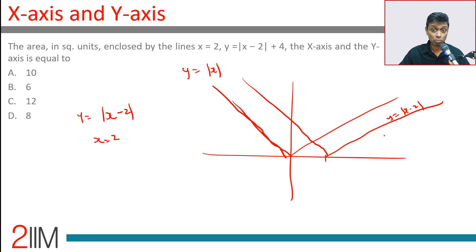How will y=|x-2|+4 be? Add 4: 1, 2, 3, 4. It will be a line like this.